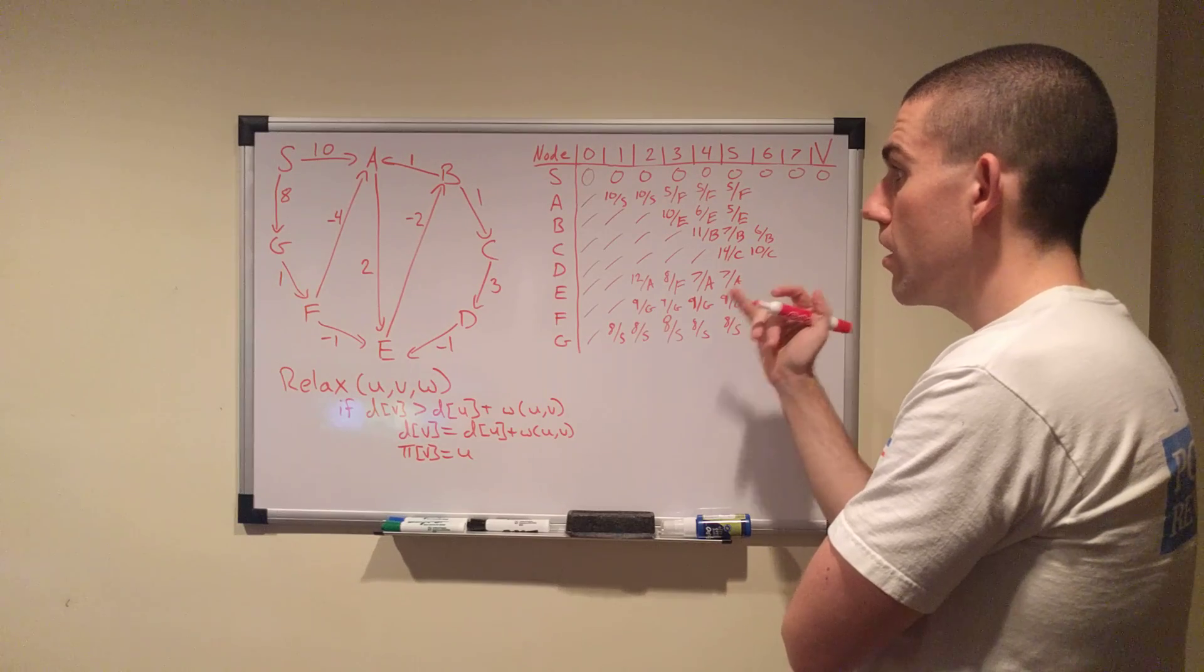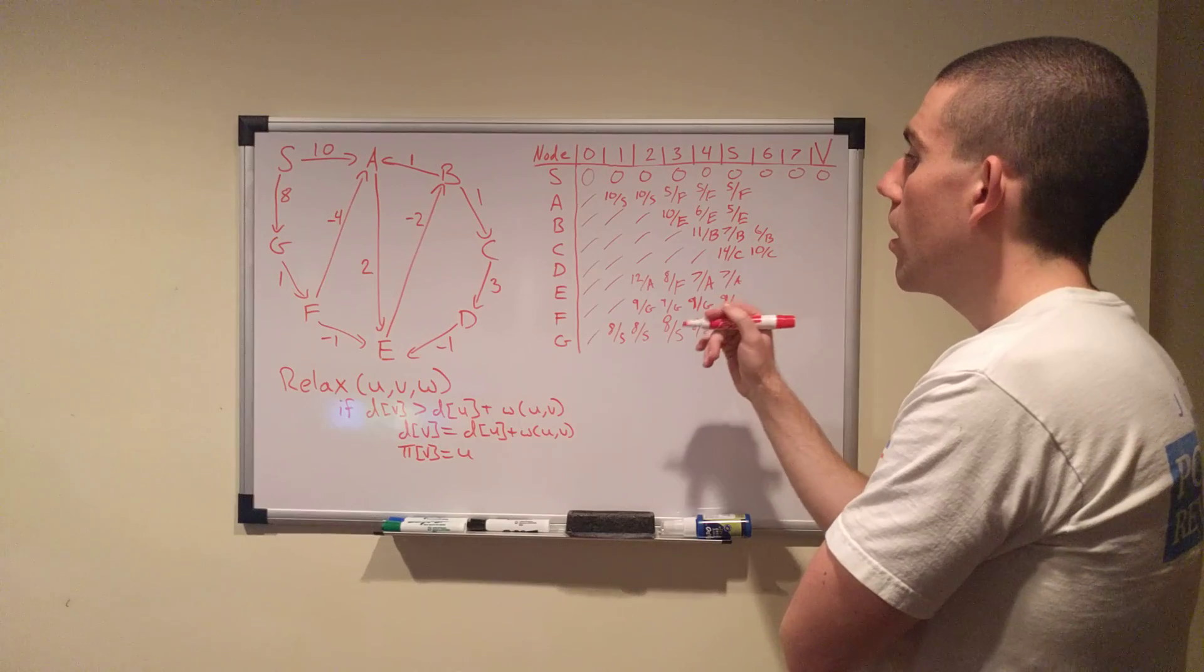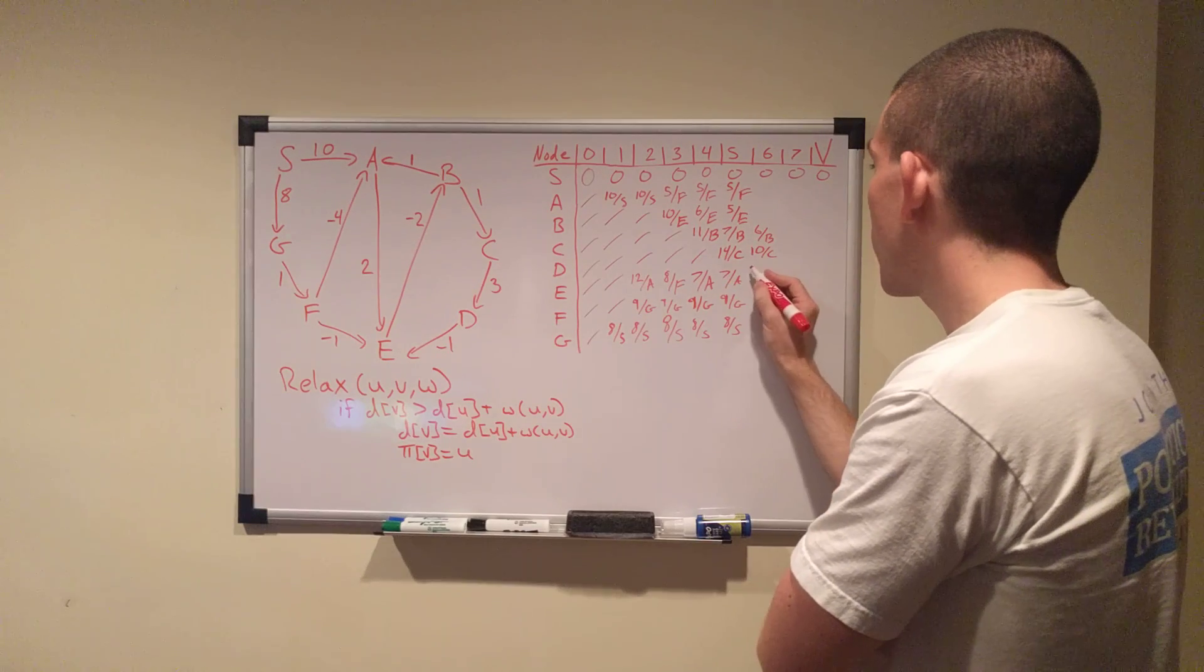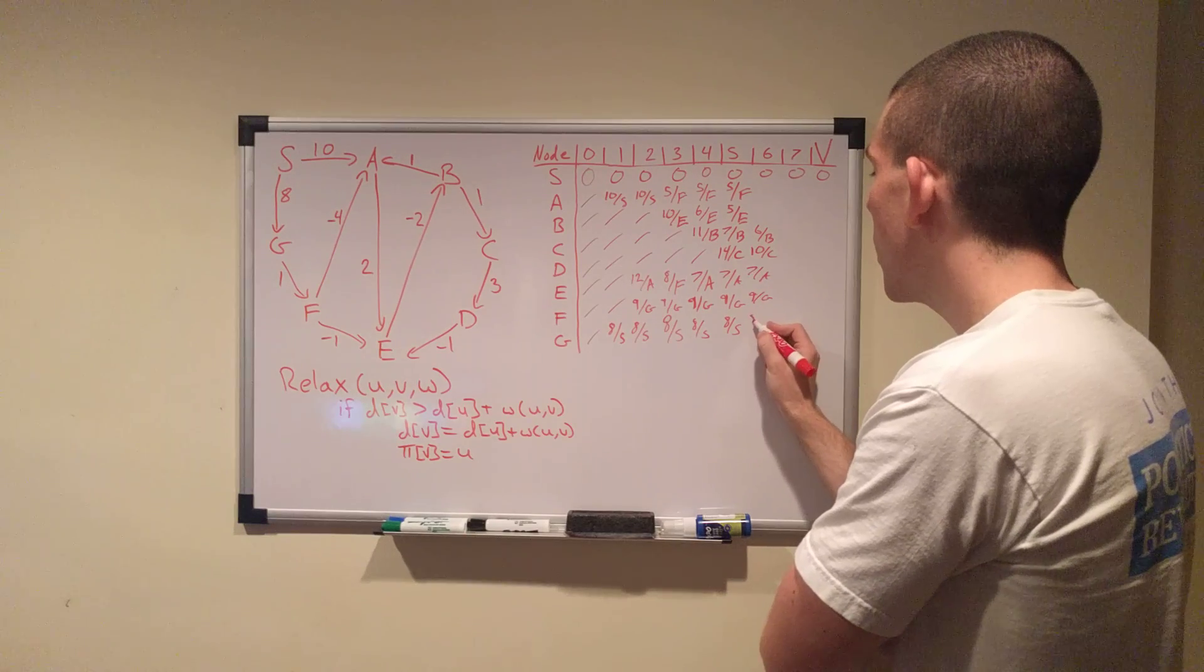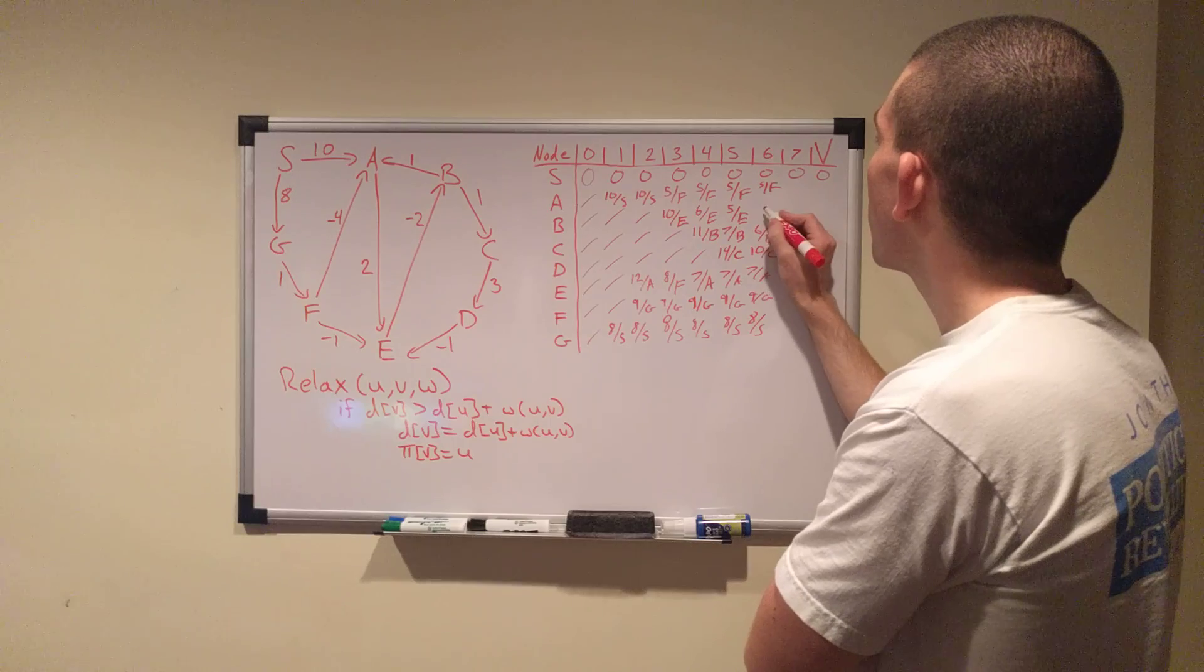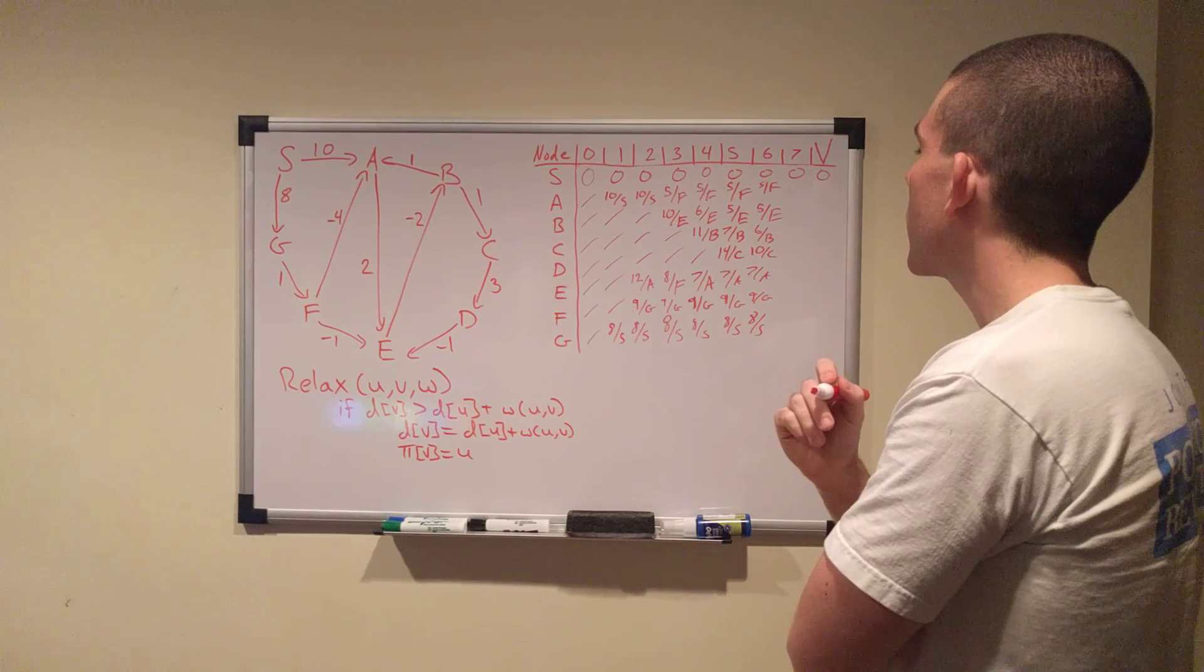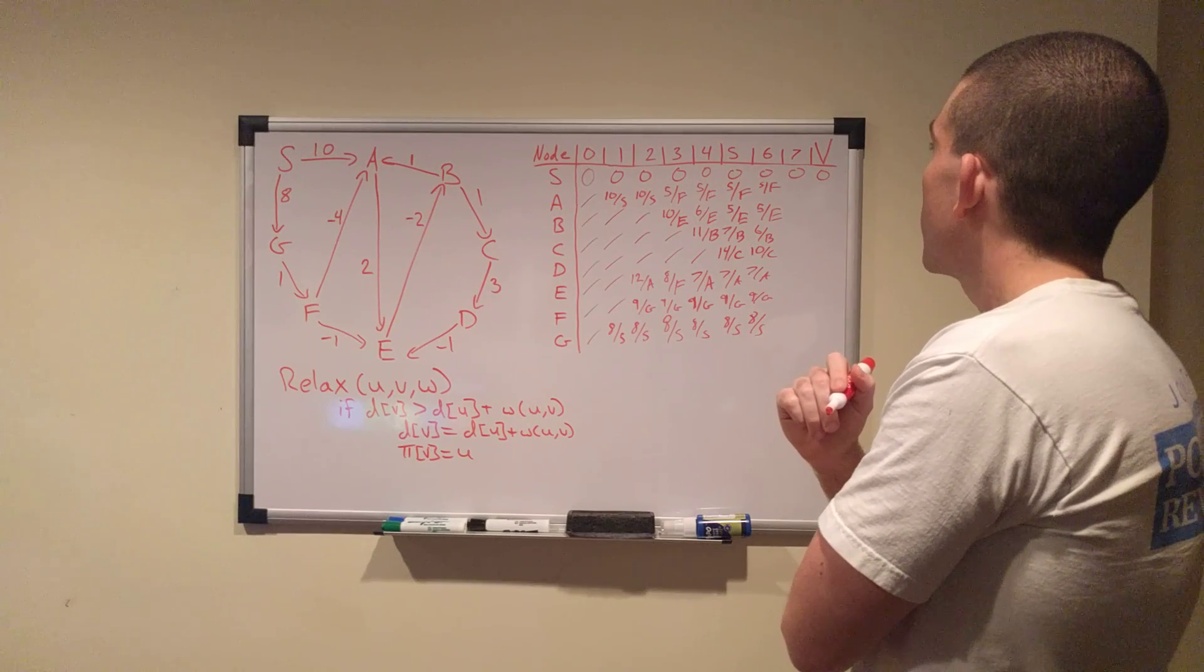F still only has two outgoing edges, doesn't change anything. G only has one outgoing edge, doesn't change anything. So, 7, A, 9, G, 8, S, 5, F, 5 from E. So, 5, 5, 6, 10, 7, 9, 8 so far. Seventh iteration.